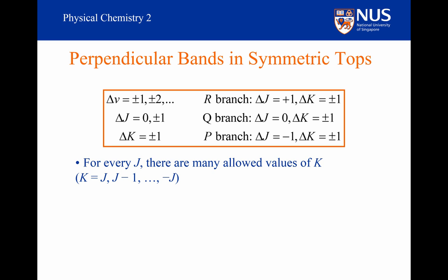For every value of J, we've got many allowed values of K. And so we've got lots of P, Q and R branches.